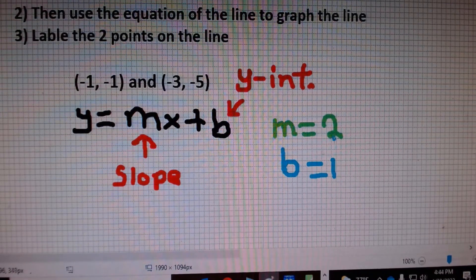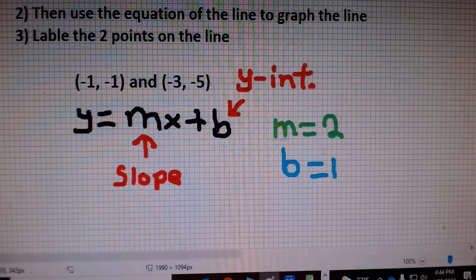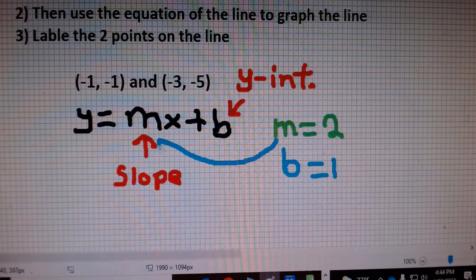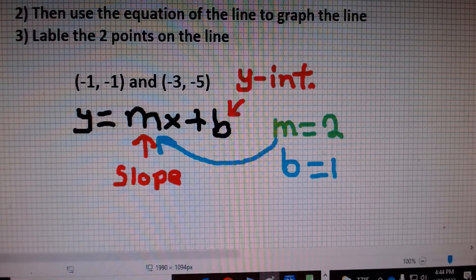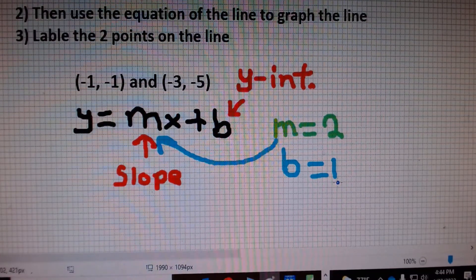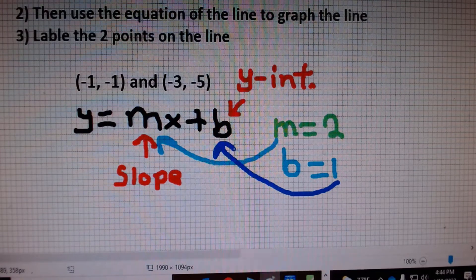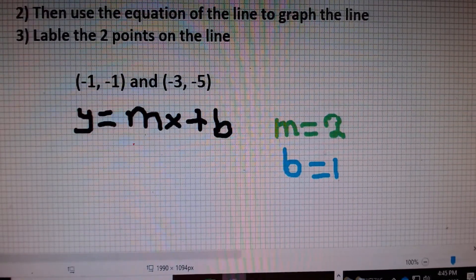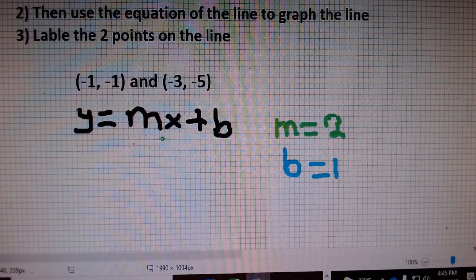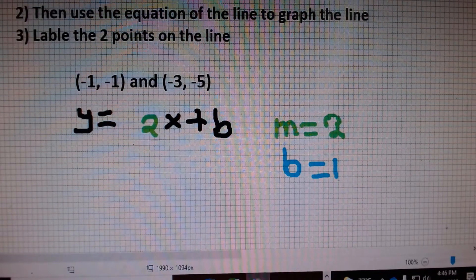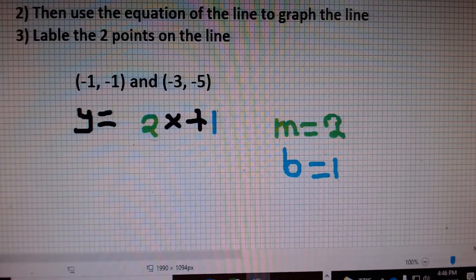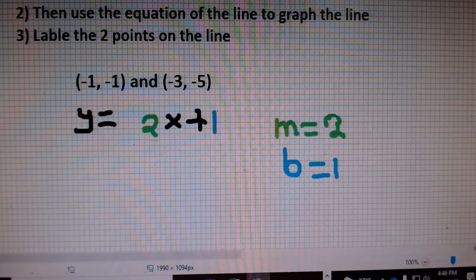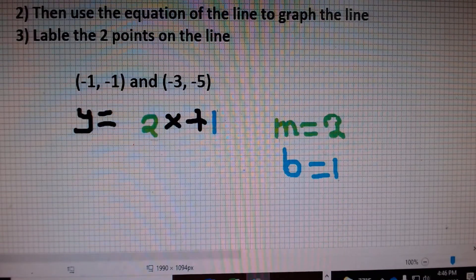Using the substitution method, I'll substitute the m for 2, and I'll substitute the b for 1. And so, my answer is y equals 2x plus 1. I'll now graph it.